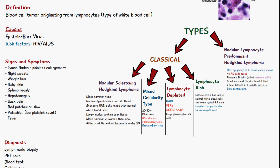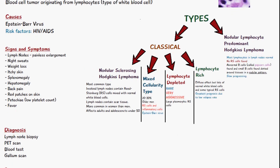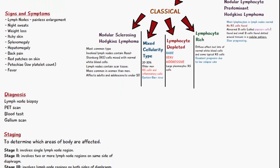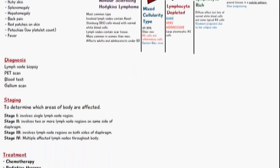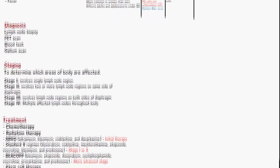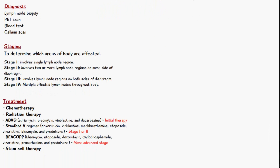The diagnosis of Hodgkin's lymphoma can be done using a lymph node biopsy. Other methods include a PET scan and a blood test. A gallium scan used to be used but is not used so much anymore.